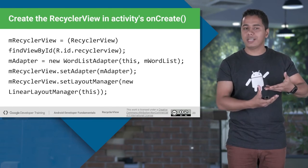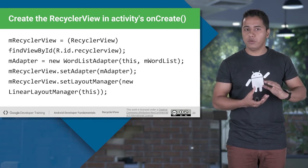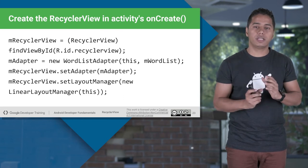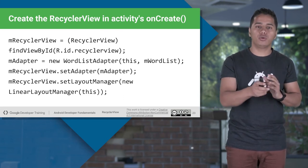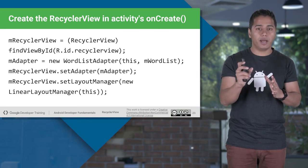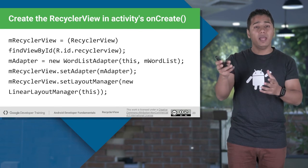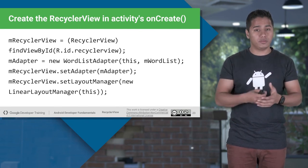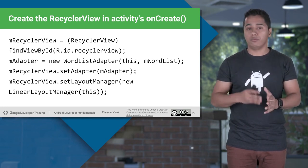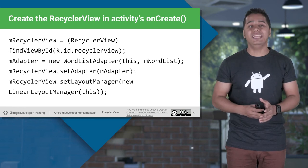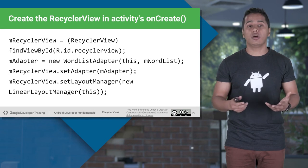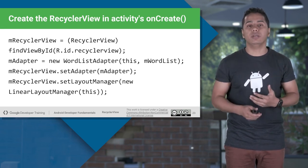Once you set up your adapter class, all you have to do is set this adapter to your RecyclerView. Come to your main activity's onCreate, get access to your RecyclerView using findViewById, then initialize the adapter object and set it to the RecyclerView. One last thing you need to do is set the LayoutManager — LinearLayoutManager for a ListView, GridLayoutManager for a GridView. That's all, and you will be able to see your RecyclerView in action.